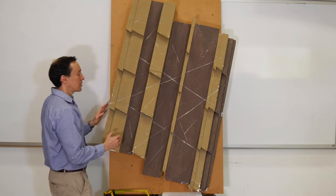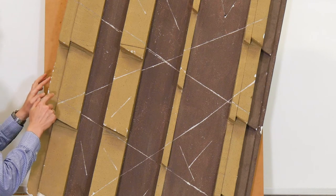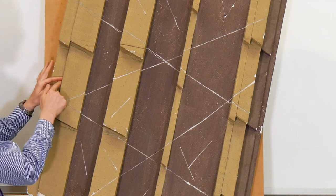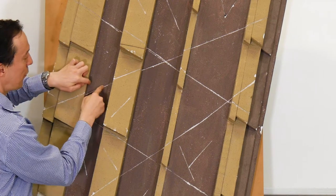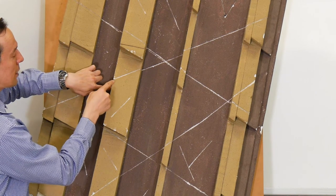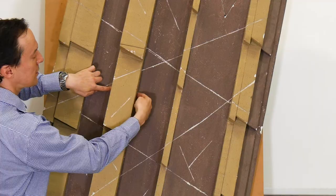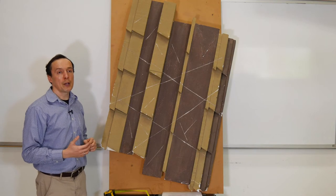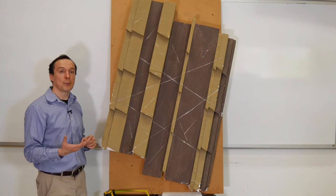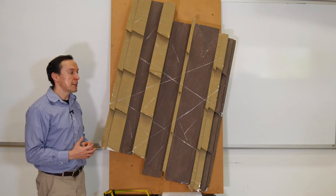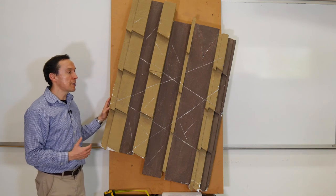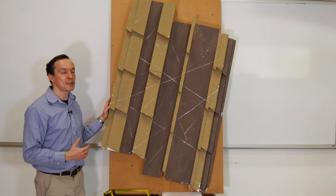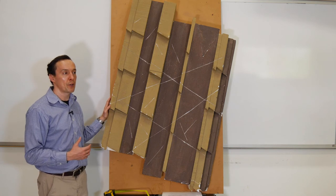For example, that will be if we start from here, this is one, two, three, four, five, six, then here seven, eight, nine. So we just count this number and then we use this number to estimate the spacing. As I mentioned, the spacing and the count of discontinuities is very important because it will give you some idea about the strength of rock mass. That's why we need to measure it.